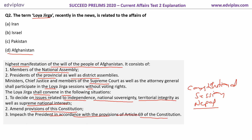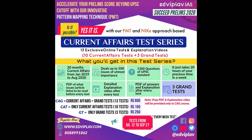These are the specific situations where the highest manifestation of the will of the people is required, and at that time the Loya Jirga is formed. So the answer to this question is option D — Afghanistan.